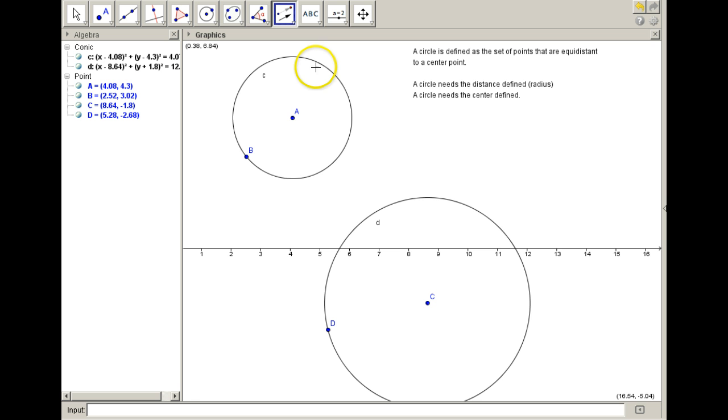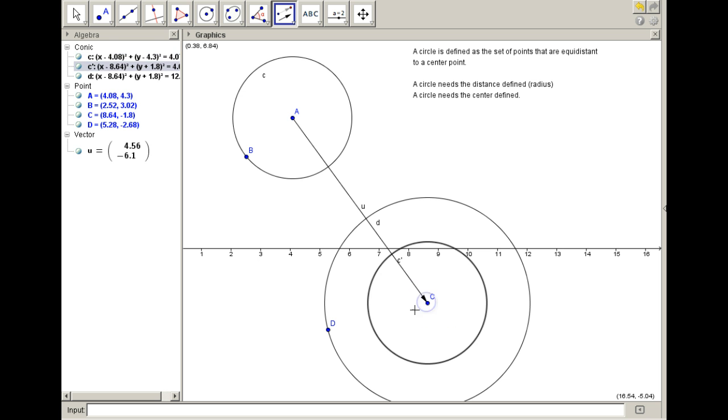We're going to translate the object. So I want to translate the circle in distance and direction of this vector here from A to C. And now I have two circles, right? This circle here.